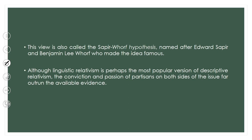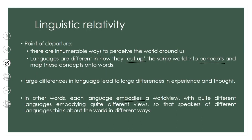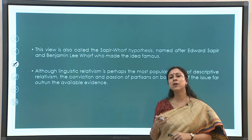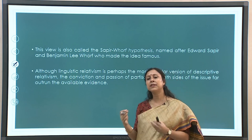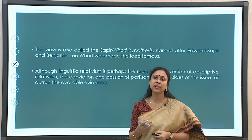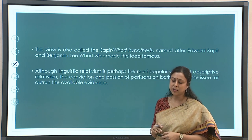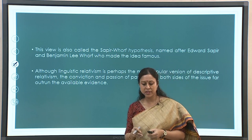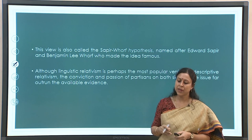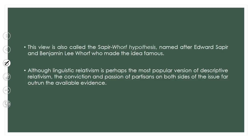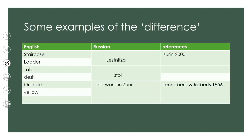This view is called linguistic relativity — also known as the Sapir-Whorf hypothesis, because Edward Sapir and Benjamin Lee Whorf were the first to make this idea famous. Linguistic relativism, linguistic determinism, and the Sapir-Whorf hypothesis all talk about the same thing: that language structure has an impact on how languages codify things, and that codification impacts your way of looking at life. Before getting into the finer details, let us look at some examples of these cross-linguistic differences.